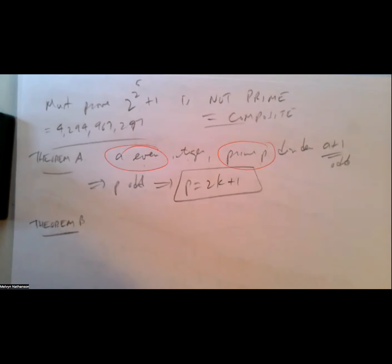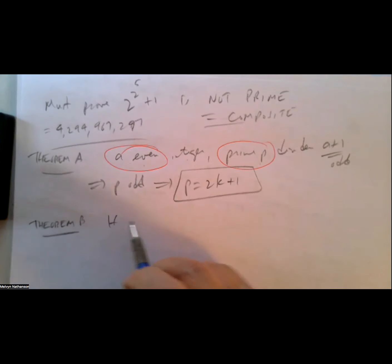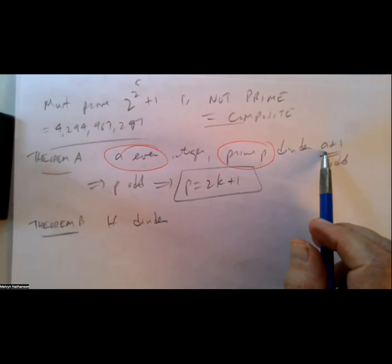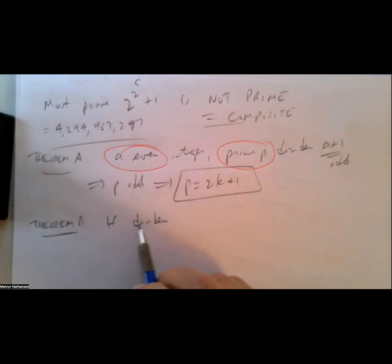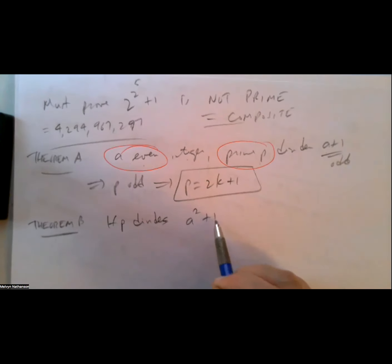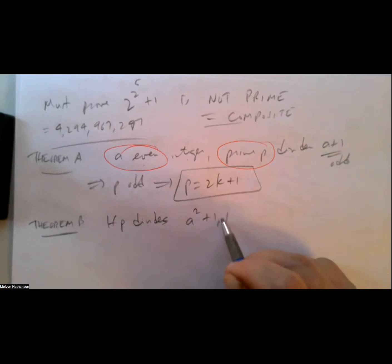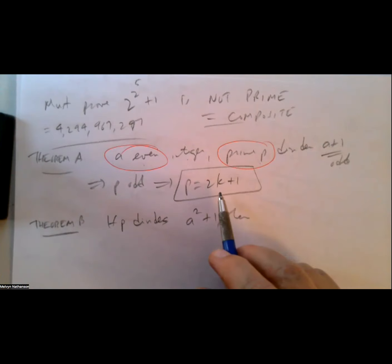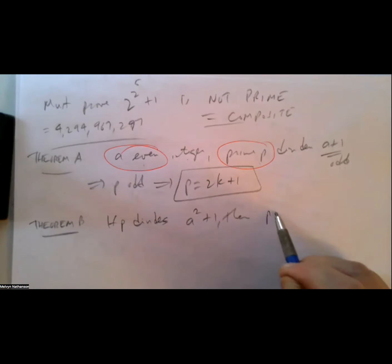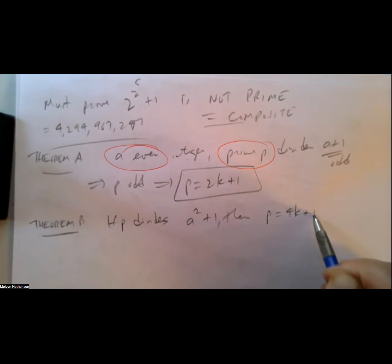We're fixing two things throughout this discussion: A is always even and P is always prime. If P divides A squared plus 1, and A is even then A squared plus 1 is odd, so P is 2K+1. But in fact the theorem says P can be written as 4K+1.